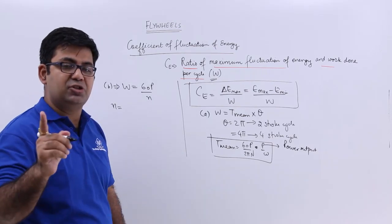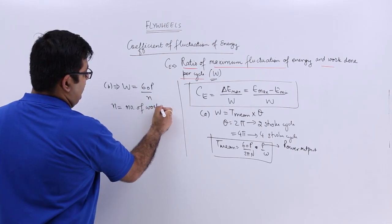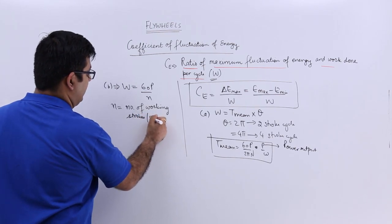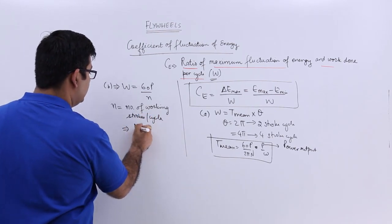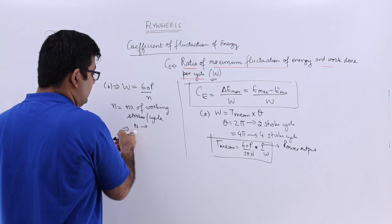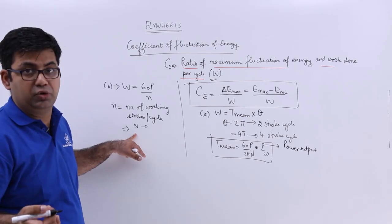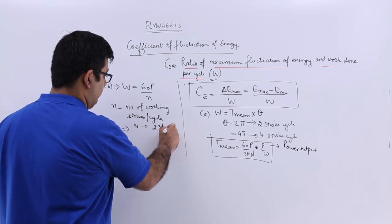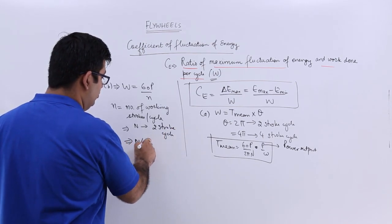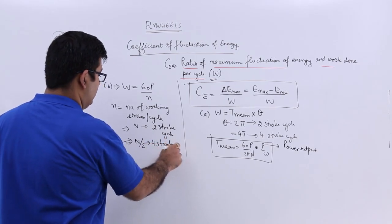This is the number of working strokes per cycle. So this is equal to n if we are taking into account the two-stroke cycle, which is equal to the rpm. So number of working strokes per cycle is equal to the rpm for a two-stroke cycle. And this is equal to N by 2 for a four-stroke cycle.